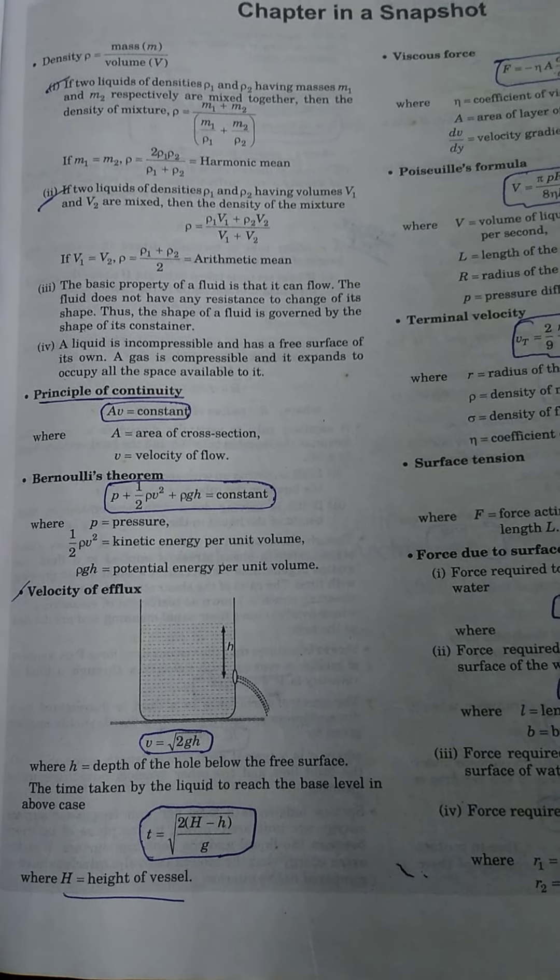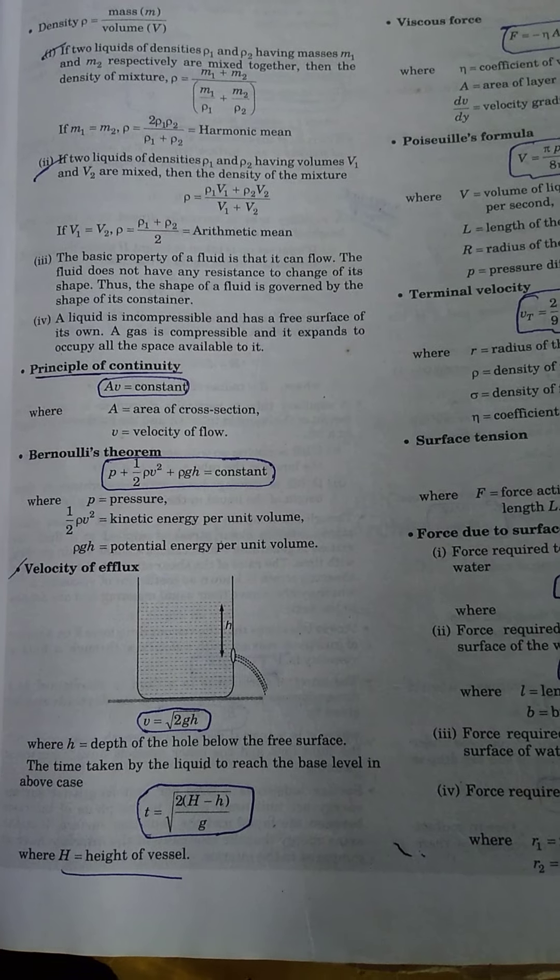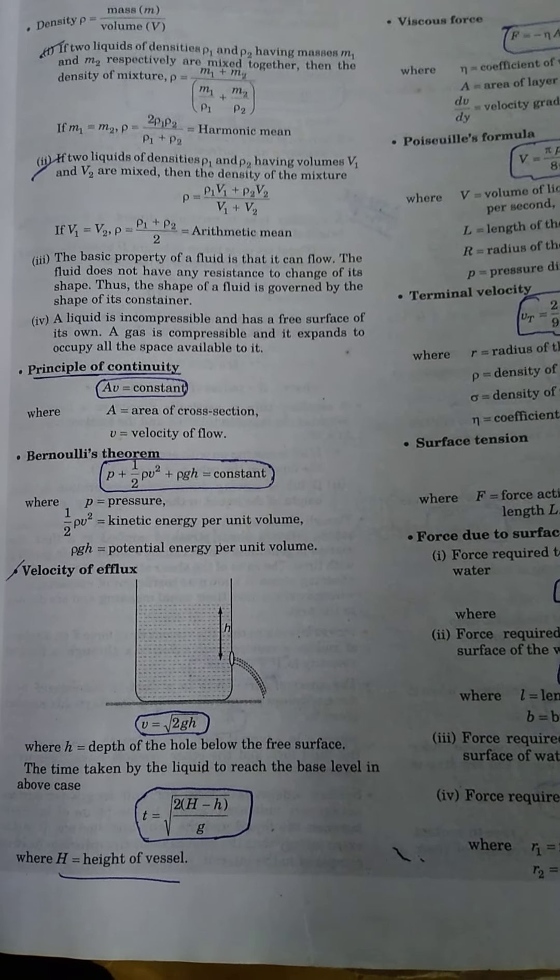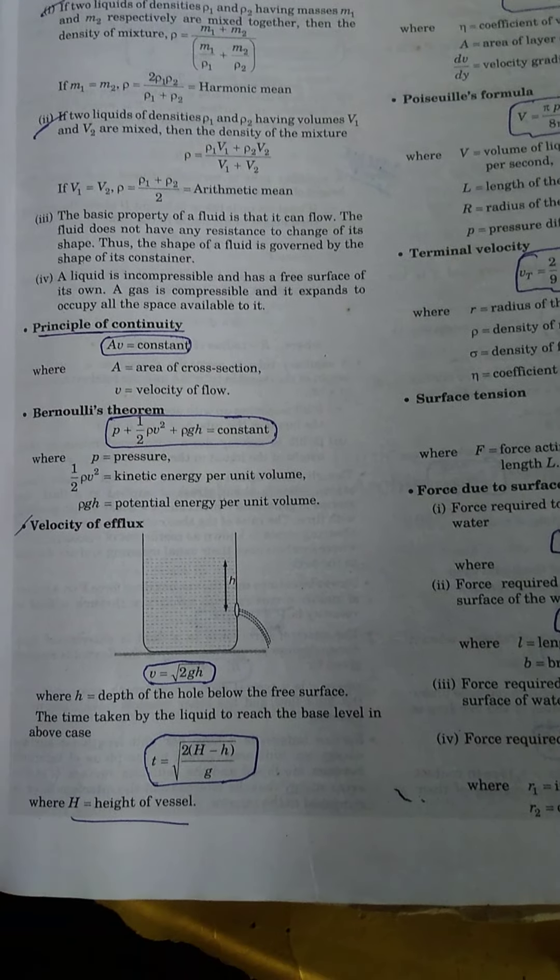P is the pressure, half ρv² is the kinetic energy per unit volume, and ρgh is the potential energy per unit volume.